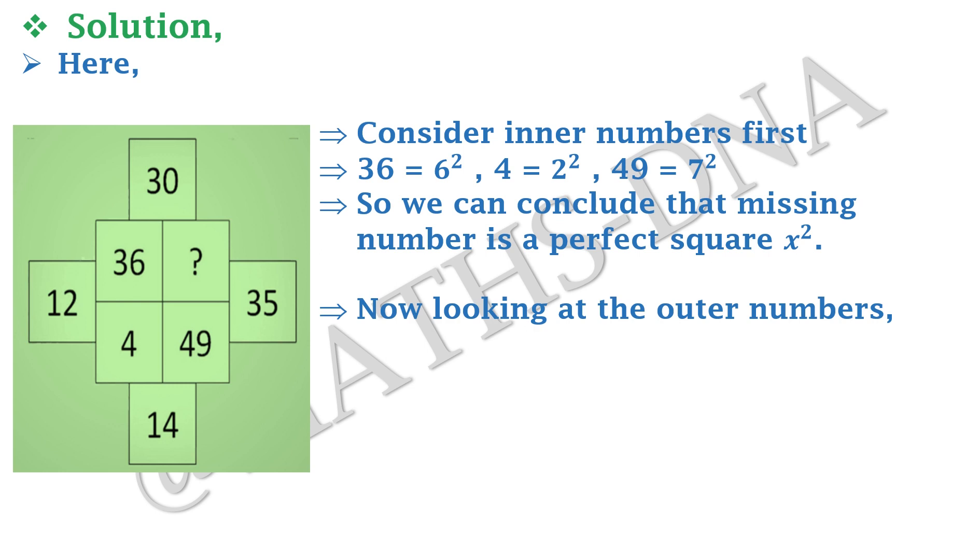So let us move on to the outer numbers or the outer boxes. From 12 and 14, we can consider it as 12 equals to 6 into 2, where 6 is from 36 and 2 is from 4. Similarly, 14 can be written as 7 into 2, where 7 is the square root of 49 and 2 is the square root of 4. So we got a pattern that they are multiplying the numbers that are above it with their square roots. So we get 35 equals to 7 into 5 and 30 equals to 6 into 5.